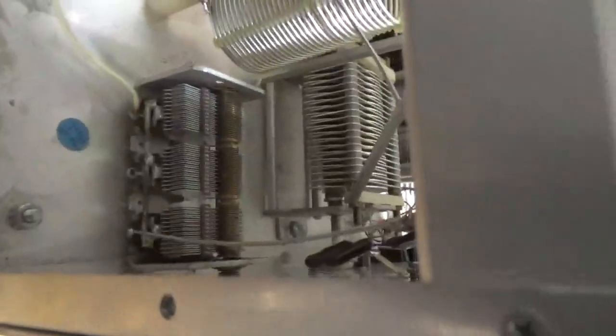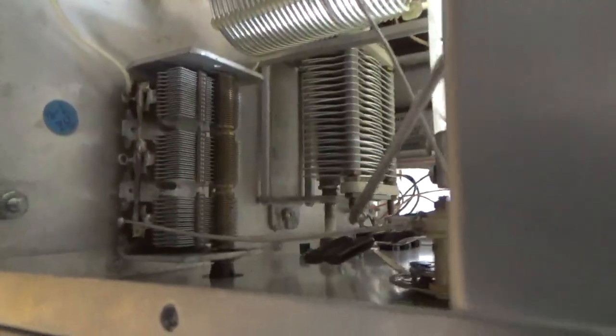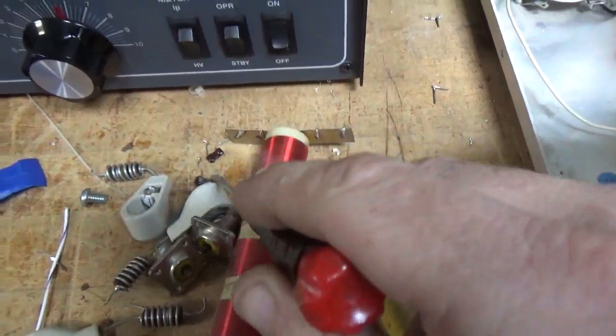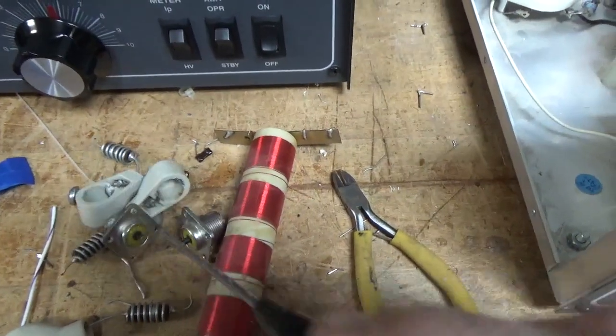Clean the output rotary switch with Deoxit Gold. I changed those two capacitors, it's supposed to be a 500 puff and a 360 puff at 1 kV. Here's the old style plate choke, the old caps, little parasitic suppressors, those caps, the old SO239s.